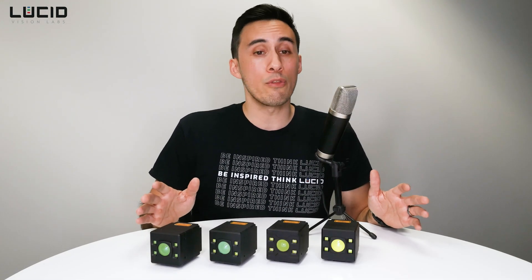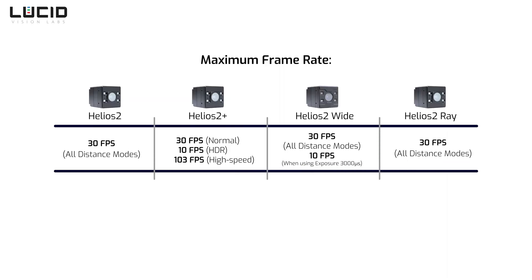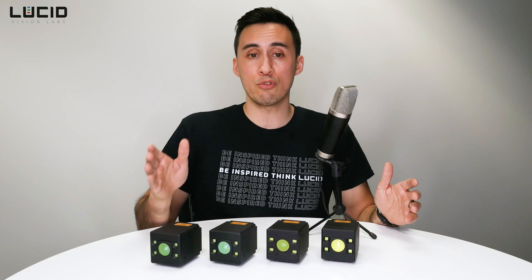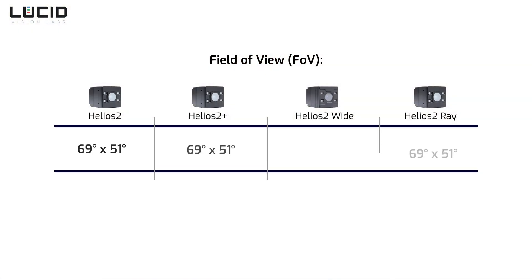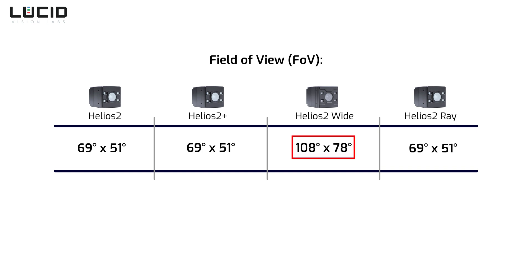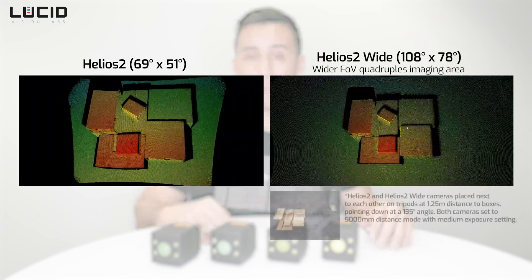For frame rates, all models support 30 frames per second for all distance modes. The major difference comes from the Helios II Plus HDR and high-speed mode, and the Helios II Wide's 3000-microsecond exposure setting. Moving on to field of view, the Helios II, II Plus, and Ray all have the same FOV of 69 by 51 degrees. The Helios II Wide, as the name implies, is designed to image a much larger area with a field of view of 108 by 78 degrees, allowing it to image about four times more than the other models.